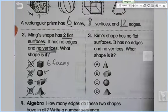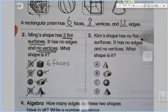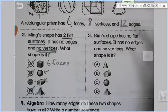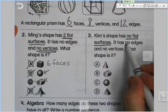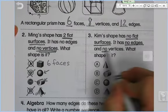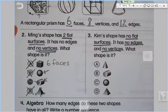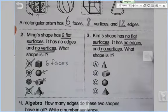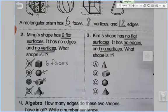Let's check out number three. Kim's shape has no flat surfaces. Important. No flat surfaces. No edges, and no vertices. Oh my goodness. I want you to go ahead and see if you can figure it out. Fill in the bubble that you think has no flat surfaces, no edges, and no vertices.